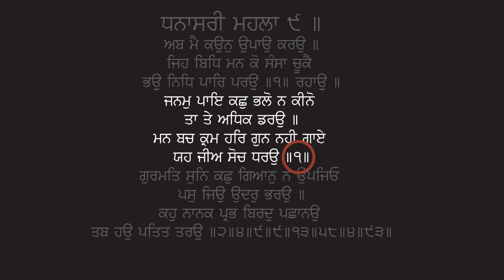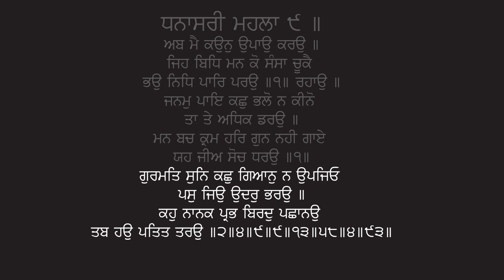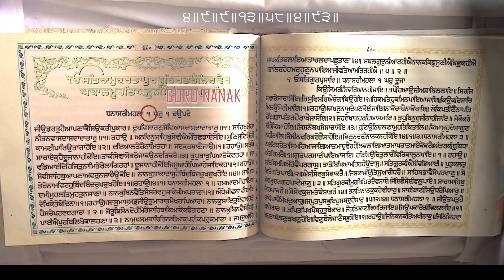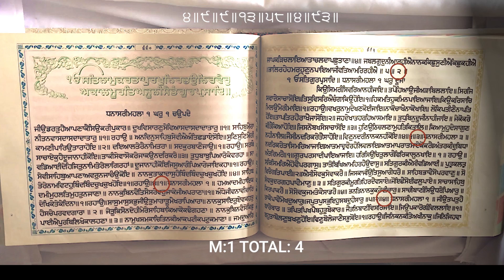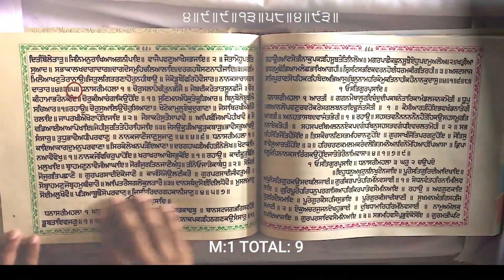The first verse has a one after the fourth line, meaning it's the first verse, and then the second verse has a two - that first number means it's the second verse in the Shabd. So we first start with Guru Nanak Dev Ji's Shabd. It says Tanah Sri Mahala Pahla - Mahala Pahla means it's the first Guru, Guru Nanak Dev Ji. On these Ang we have Guru Nanak Dev Ji's Shabds, of which there are four, and as we turn the Ang we have a further five Shabds.